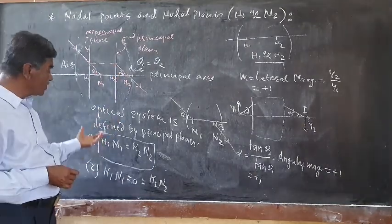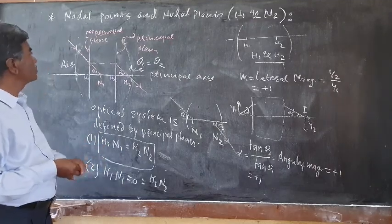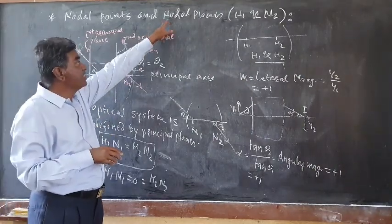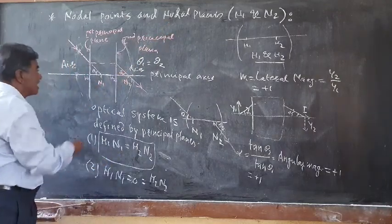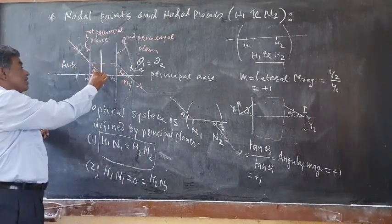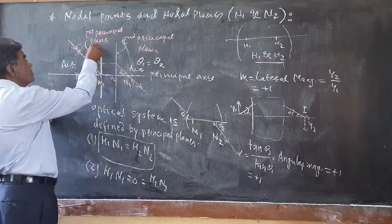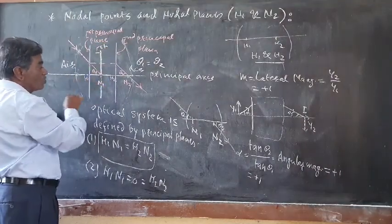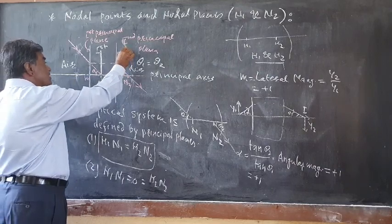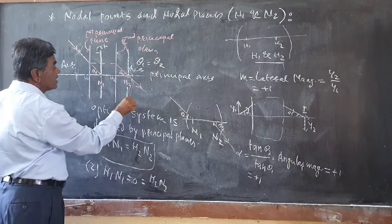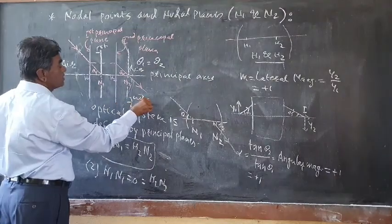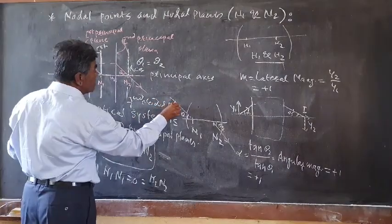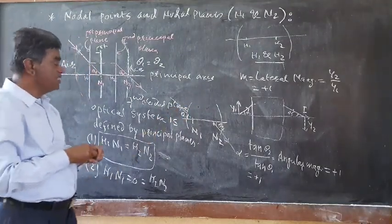These properties are useful for studying further portions. Regarding nodal planes: the plane perpendicular to the axis and passing through N1 is known as the first nodal plane, and the plane perpendicular to the axis and passing through N2 is known as the second nodal plane.